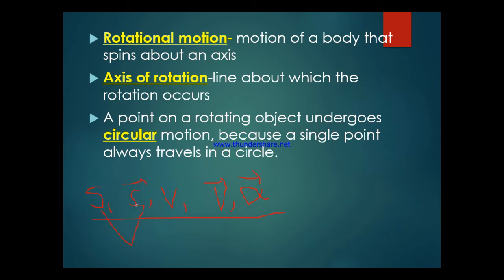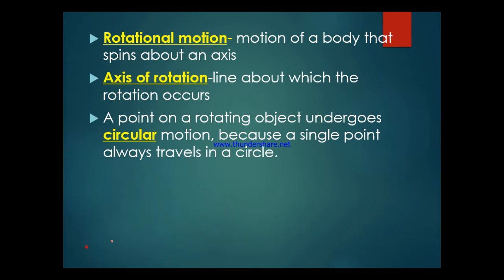For distance or displacement, we have angular displacement. For speed, we have angular speed, defined by omega. For velocity, we have angular velocity. For acceleration, we have centripetal acceleration — an acceleration in which the force seeking the object toward the center results. We are going to explain each of these terms in detail.